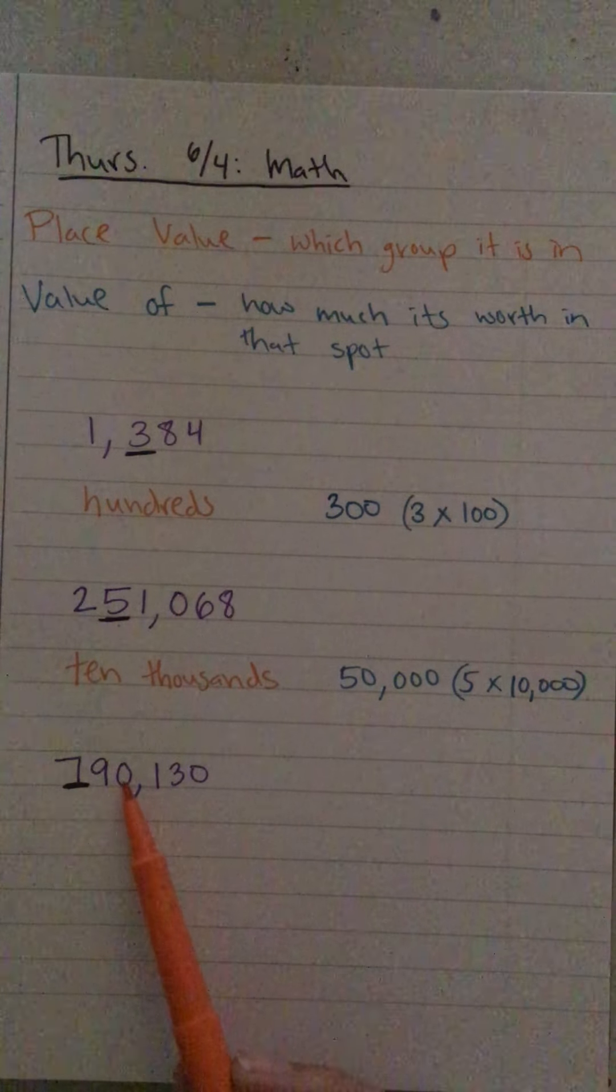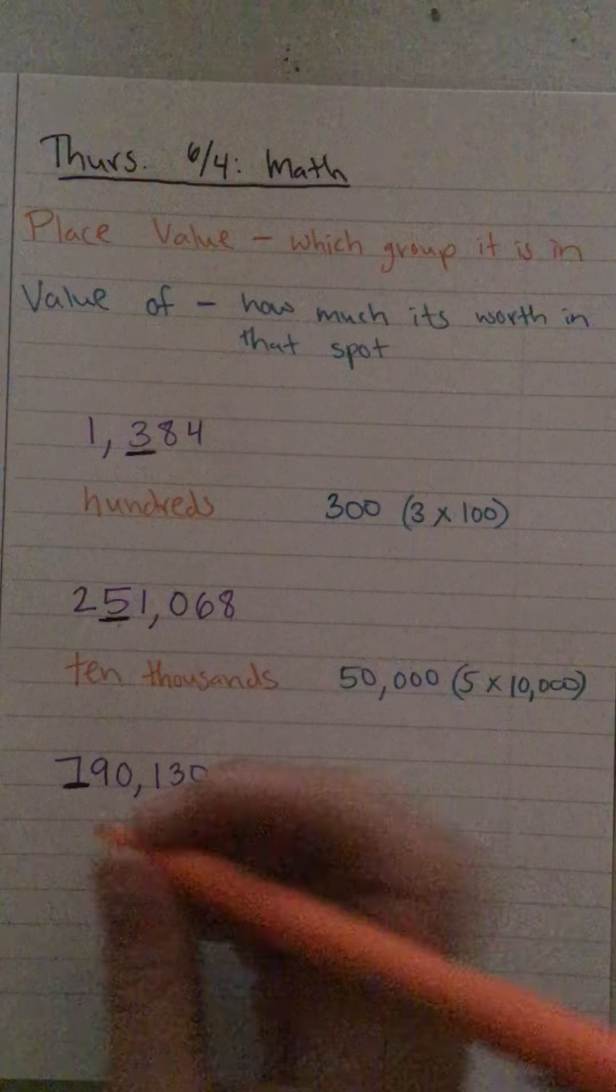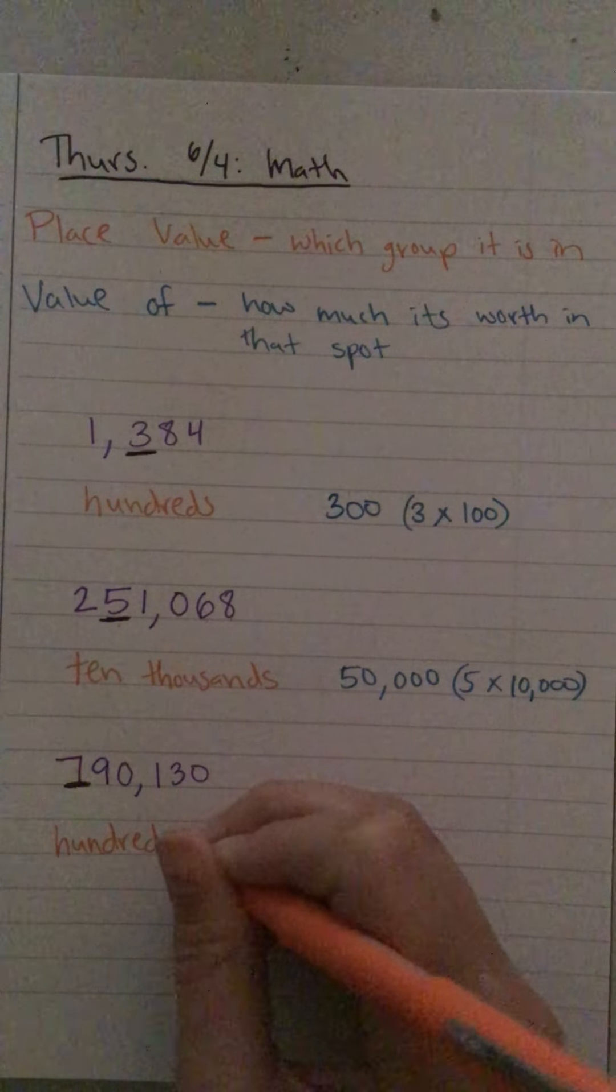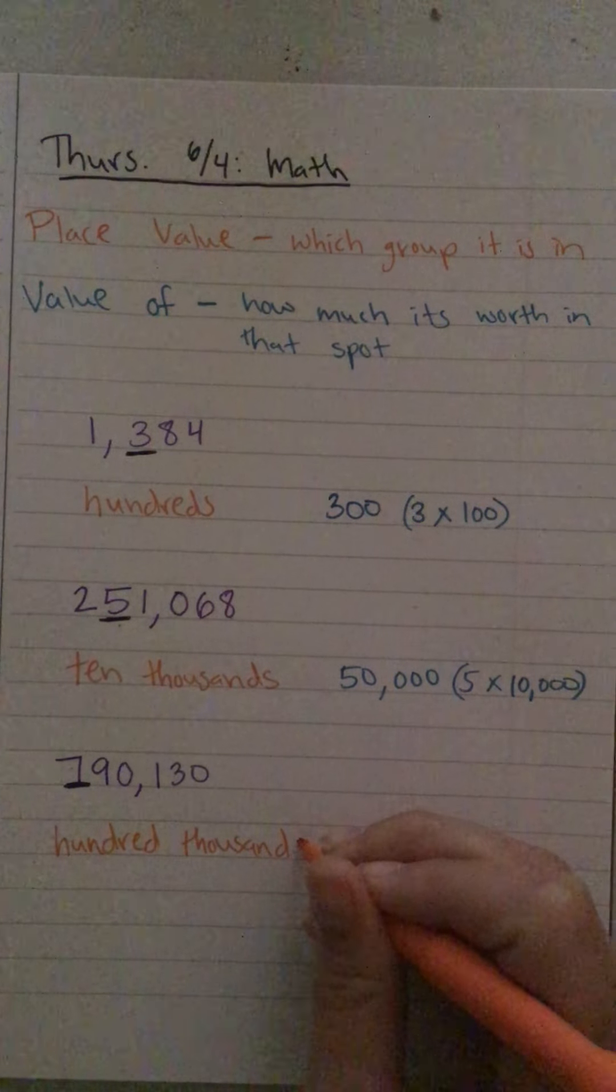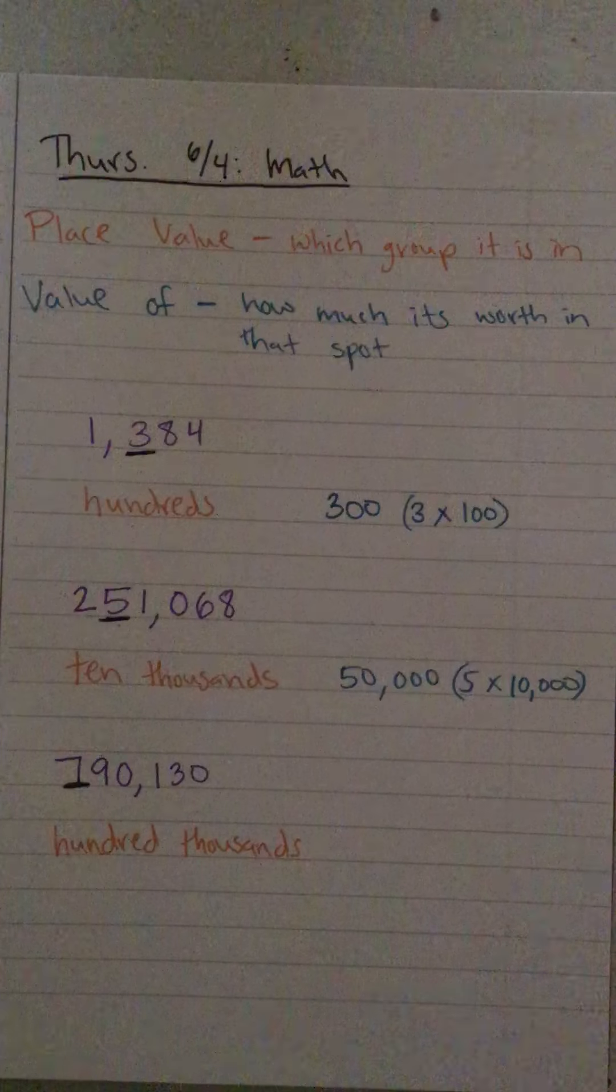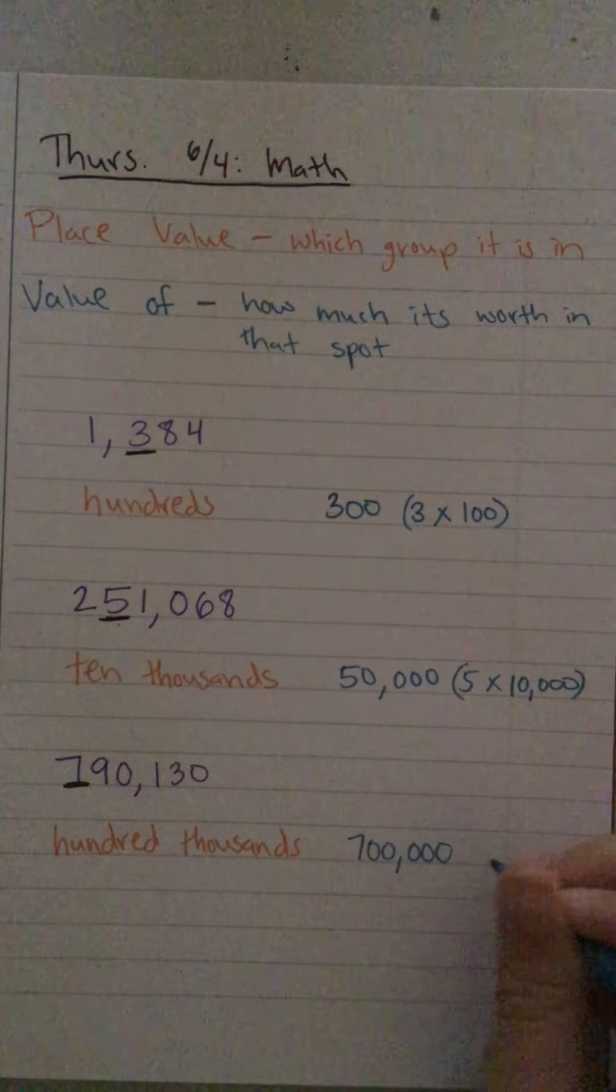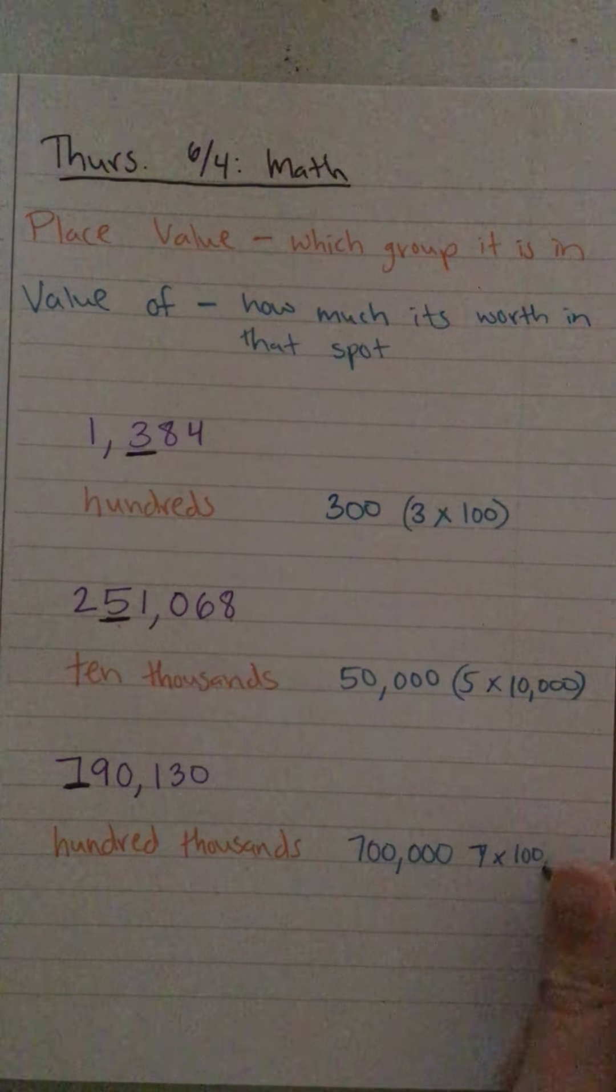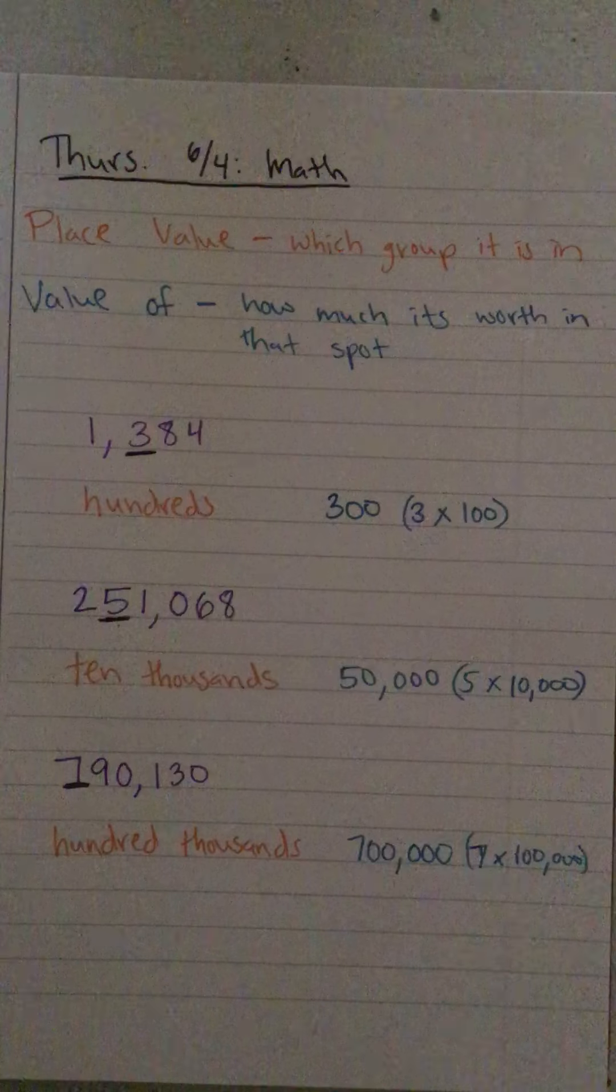Hundred thousands place is that seven. So then the value of that seven would be seven hundred thousand. It's like saying seven times one hundred thousand.